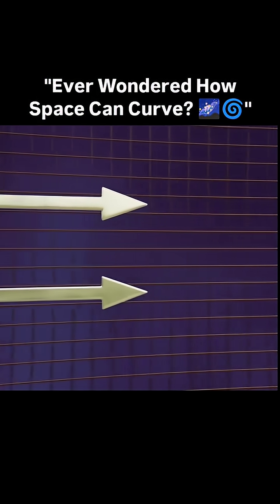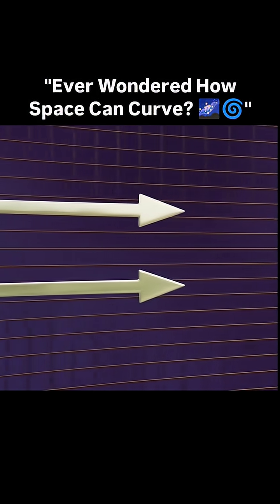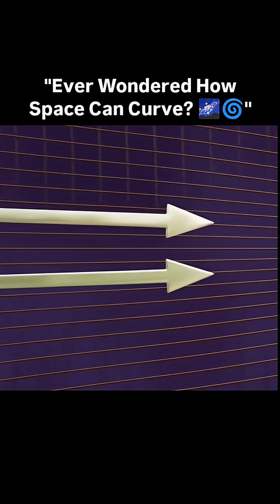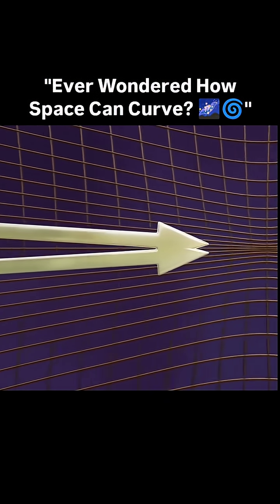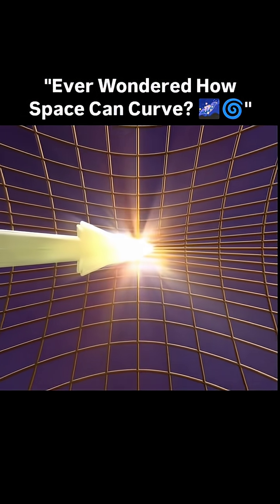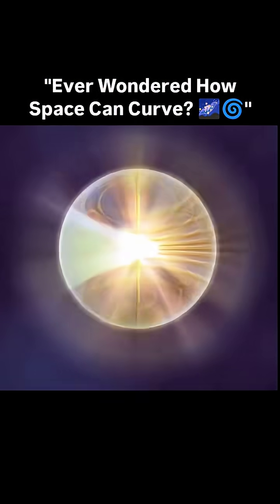Is it possible for two lines running parallel in the exact same direction to eventually converge together and meet? They can if the space they're in is curved, and curving space isn't as mind-warping as you might think.